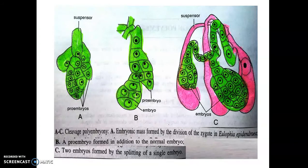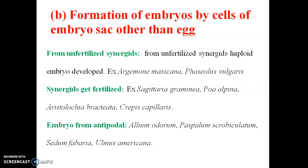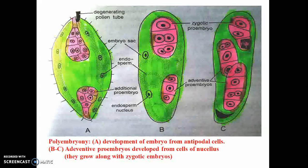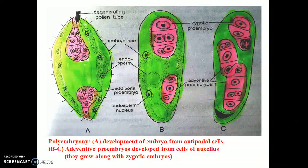The diagram of cleavage polyembryony shows the embryo dividing from the zygote. In addition to normal embryo formation in the zygote, additional embryos form alongside. Embryo mass forms from the basal cells of the zygote, and two embryos can arise as pro-embryos. This is also illustrated in the diagram of the cleavage polyembryony.